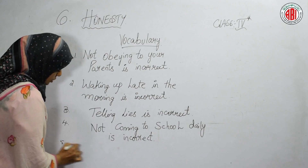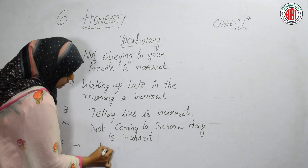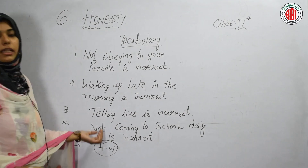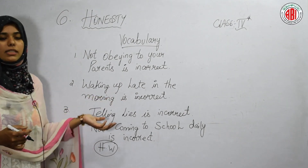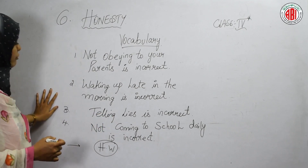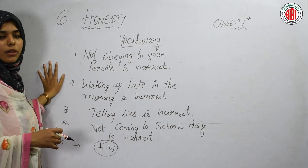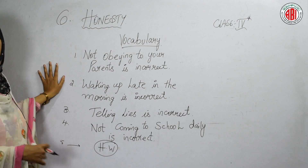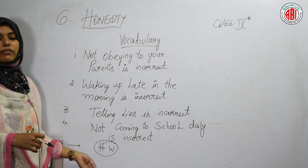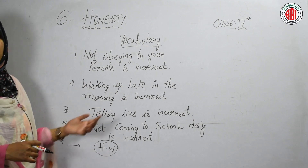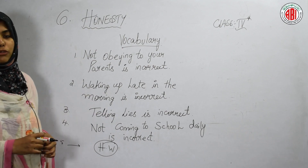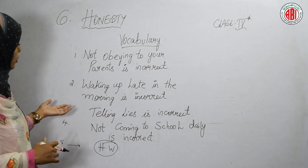The remaining fifth sentence is your homework — write from your own what else you think is incorrect, in your own words. Before that, copy down these sentences. One or two remaining sentences are your homework; write from your own point of view what things are incorrect.